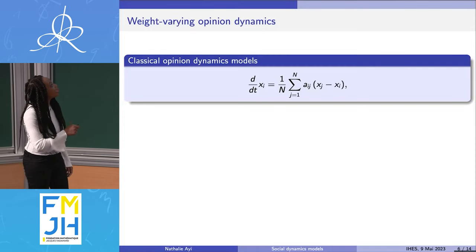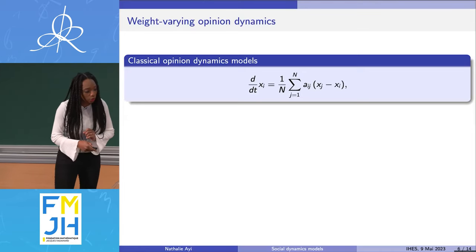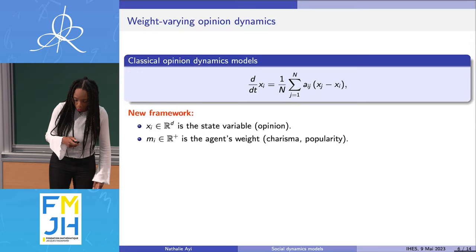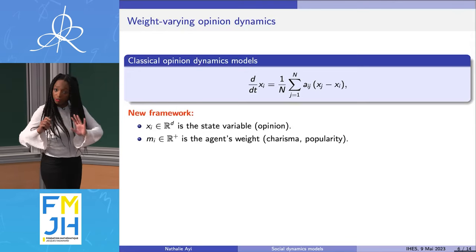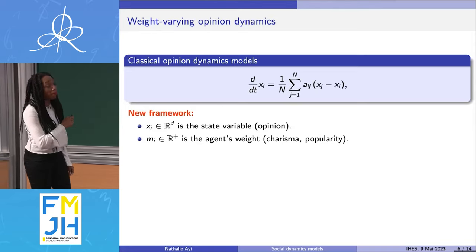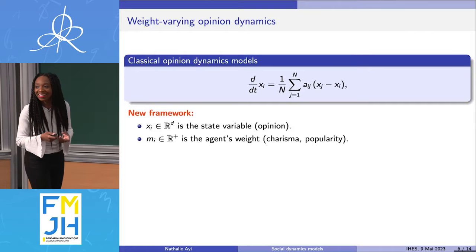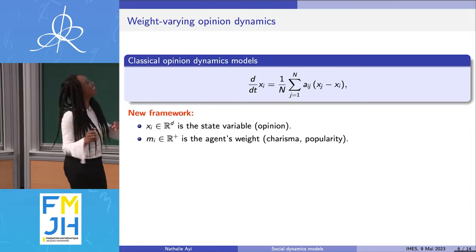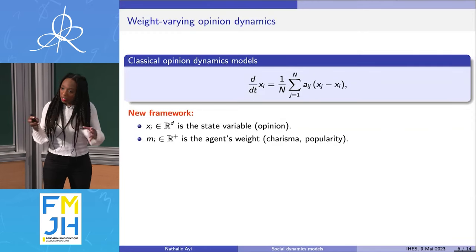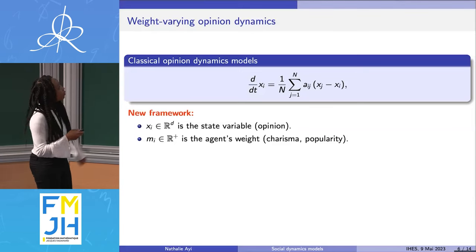So I've written what I call the classical opinion dynamics models. Now I'll show you a variant — the one I particularly study. We're still interested in the opinion of each agent, but now we introduce a new variable Mi, called the agent's weight. This represents the charisma or popularity of a person. The bigger your weight, the more charismatic, the more popular you are. So now you have two variables of interest.